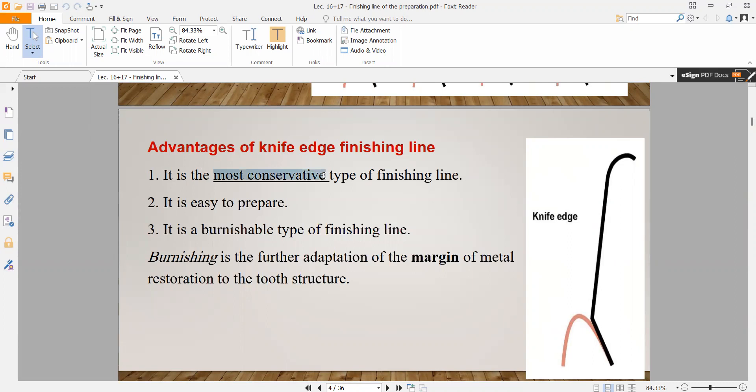Knife edge is the most conservative type of finishing line. We take the least amount possible from the tooth when we do this finishing line. It takes very little quantity so it's close to the surface, and therefore it's more burnishable.